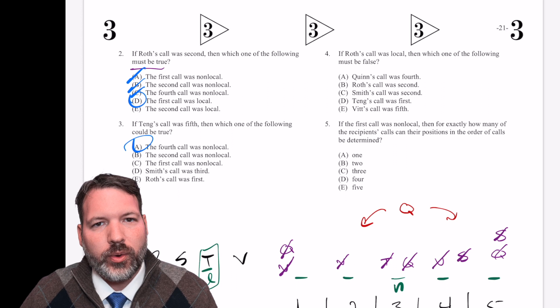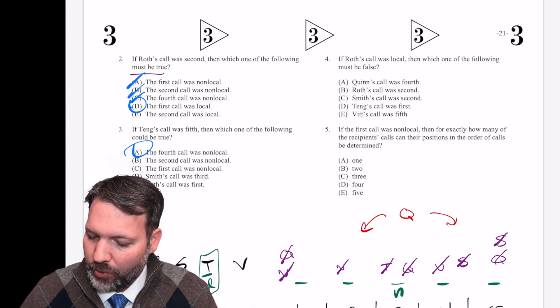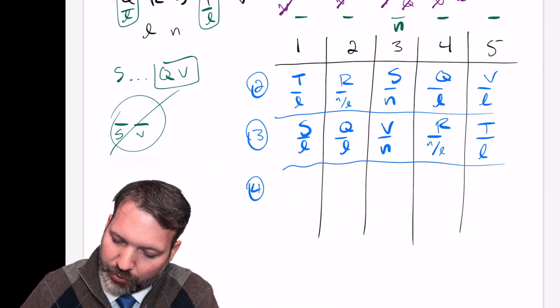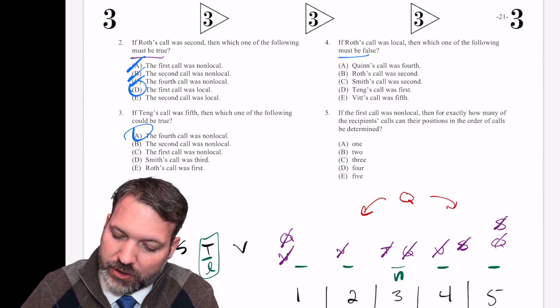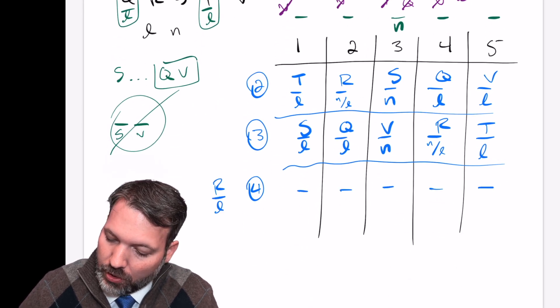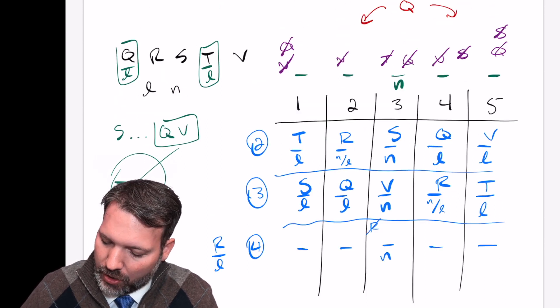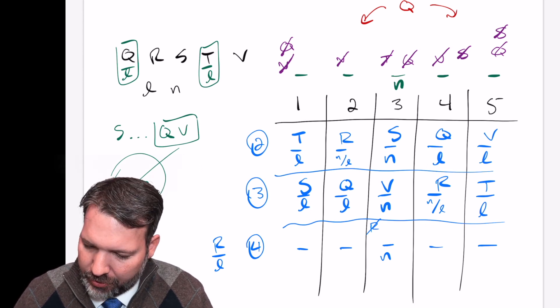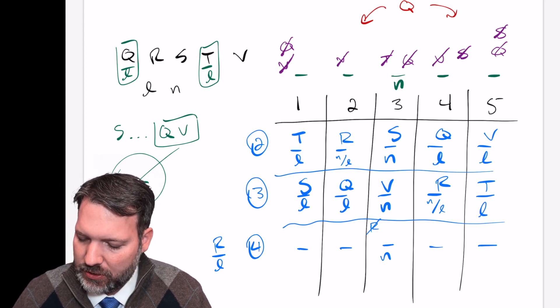Interesting game. All specific questions after that pick a clue, unless are there questions on the next page? Nope. Okay. All specific questions, four and five also specific. So I'm just going to keep going. I'm going to plug in number four here. If Roth's call was local, which one of the following must be false. Interesting. So they're not telling me where something is. They're just telling me that R is local. Well, of course, we always know that third call is non-local. So this is really another way to say that R cannot go third. Once we know that R is not third, we already know T is not third. We already know that Q is not third. So really this means that either S or V has to be third.